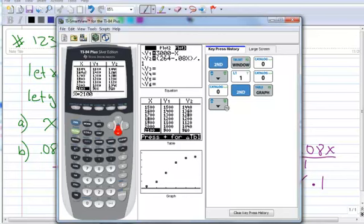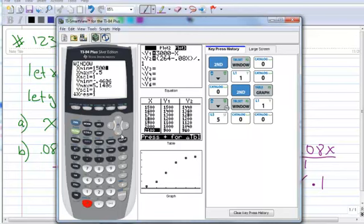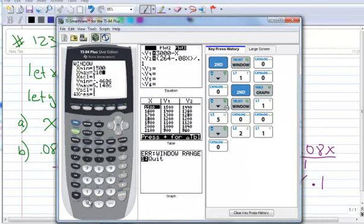So now we're going to set our window and make our window go from 1,500 to 2,100 in the X direction. So let's do that. Window 1,500 to 2,100. And now let's go back and look at our Y's.